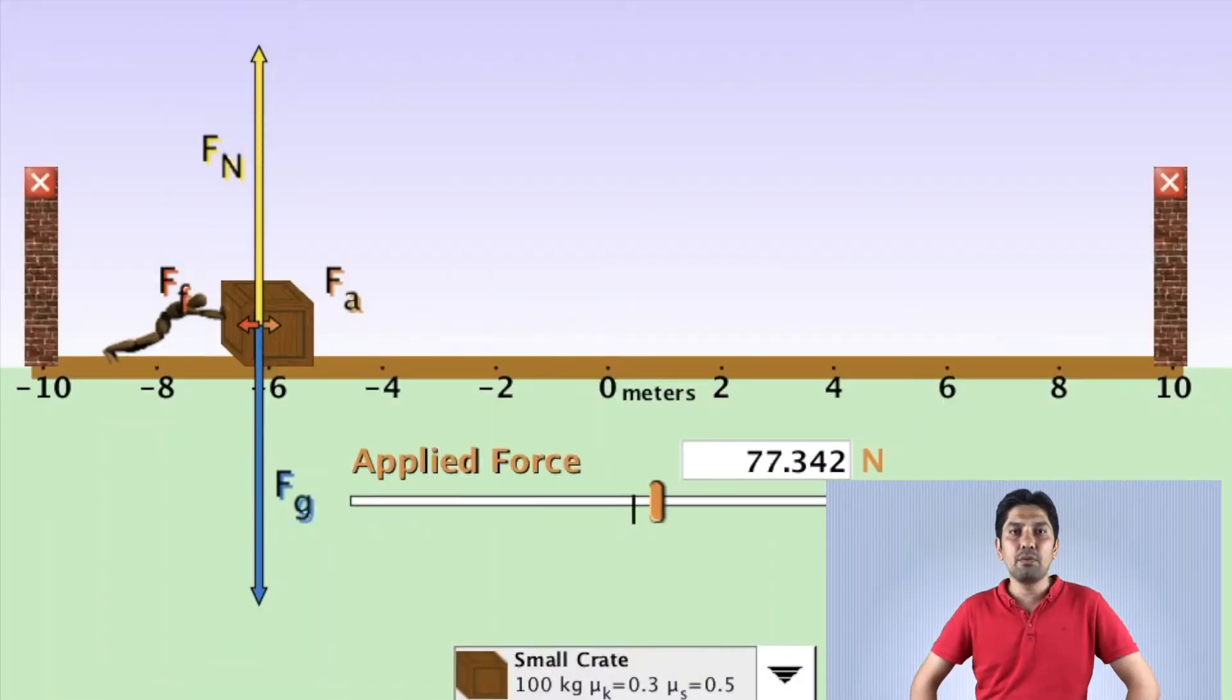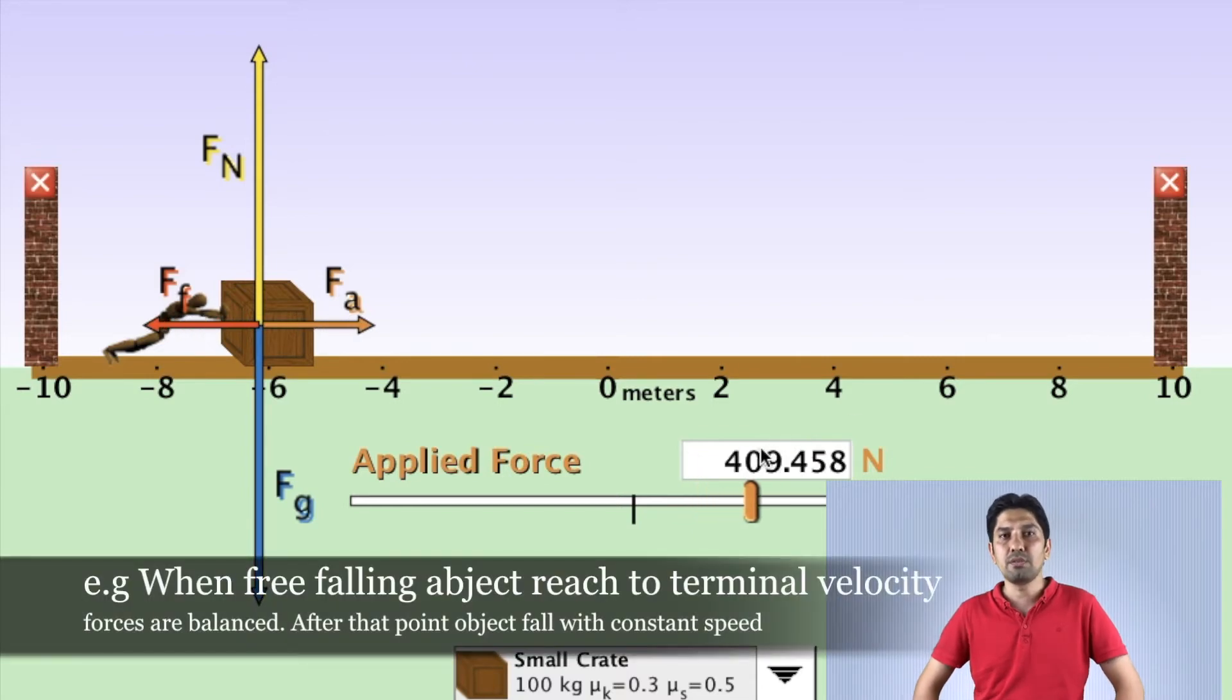If an object is under balanced force, the net force is zero, which means objects will be stationary or will continue their motion at a constant speed.